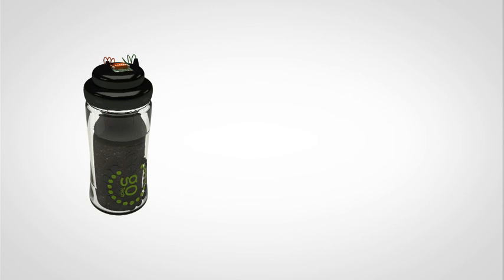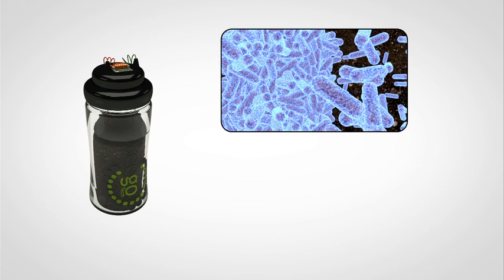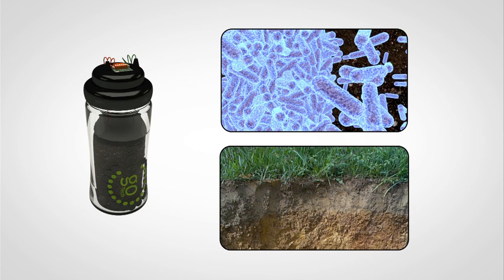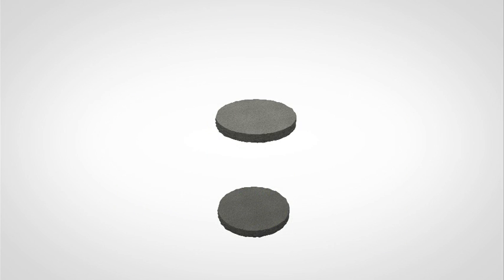The MudWatt microbial fuel cell is a bioelectrical device that uses the natural metabolisms of microbes found within soil to produce electrical energy. Here's how it works: the MudWatt is comprised of two graphite felt electrodes, the anode and the cathode, held within a durable airtight container.